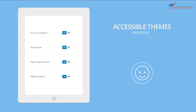It can't be easier. Simply log in to the admin panel, go to Theme Options and switch on Features, and let site visitors change the site contrast mode, width, font size, and navigate the site using the keyboard.